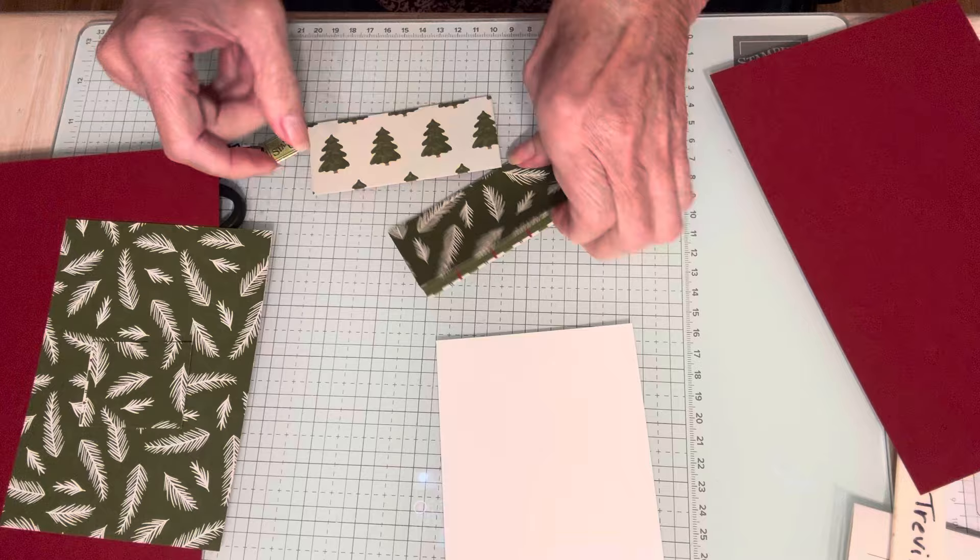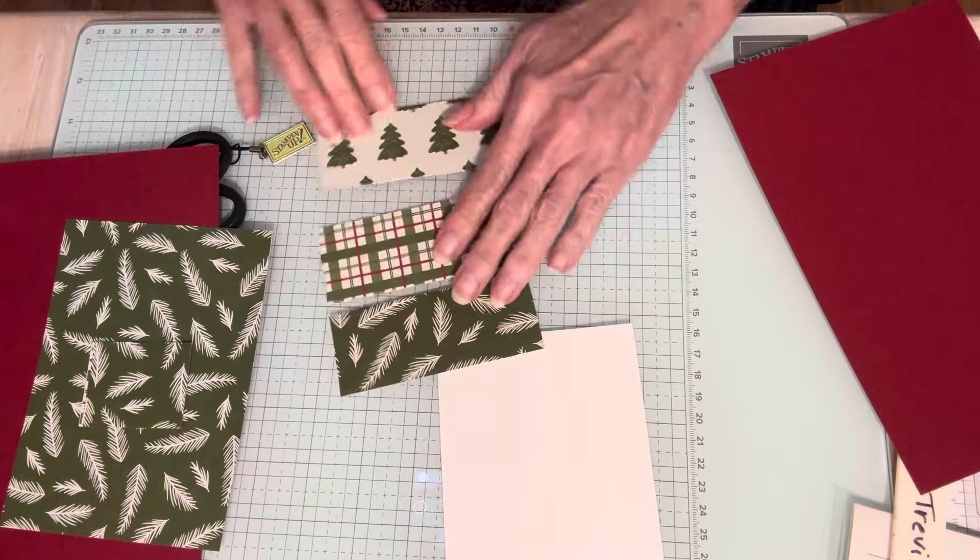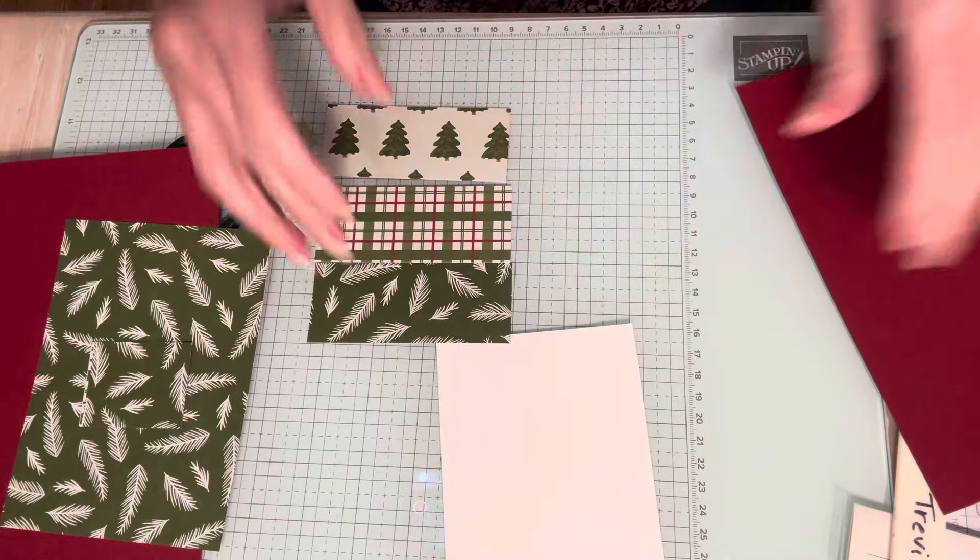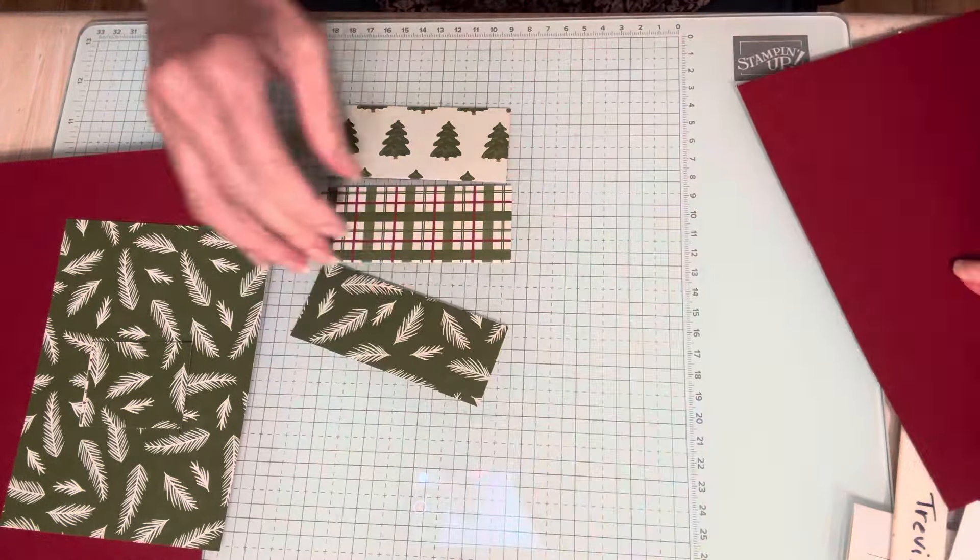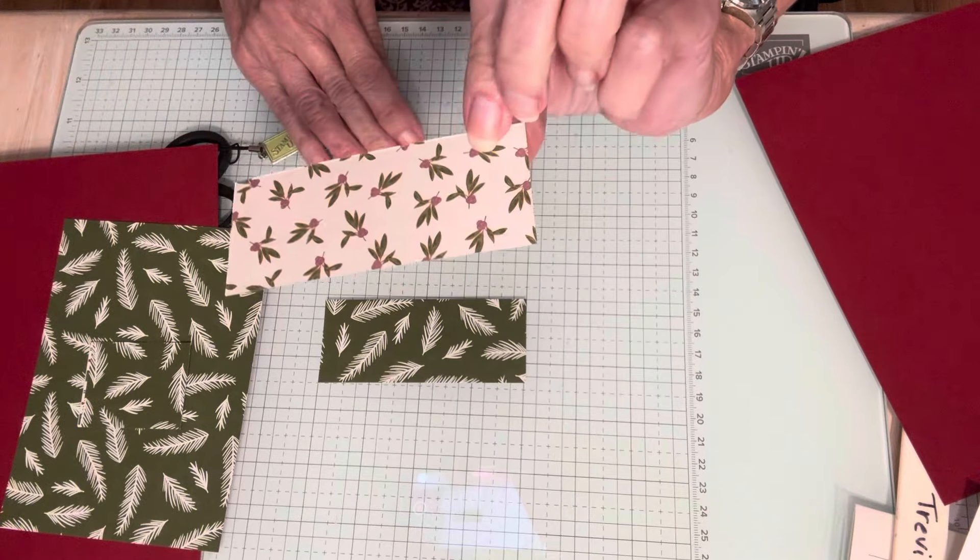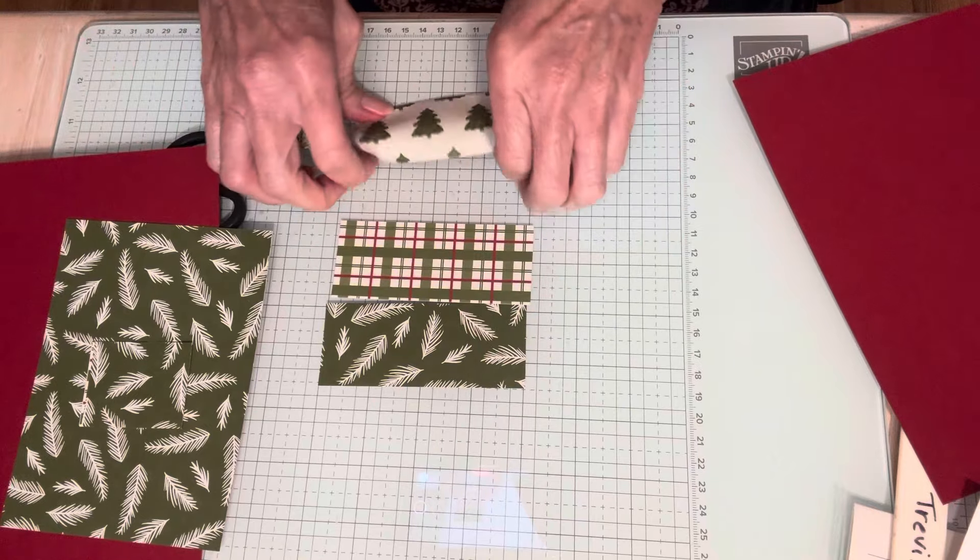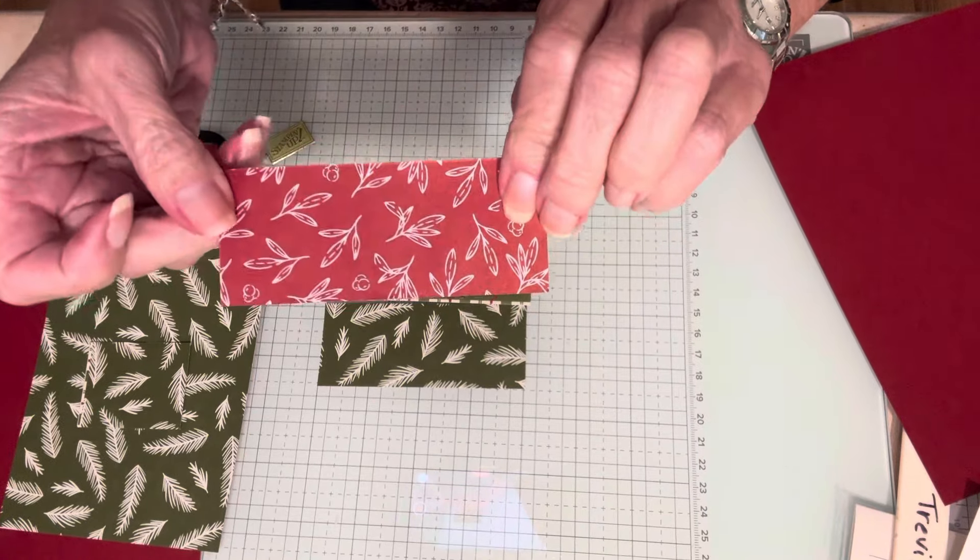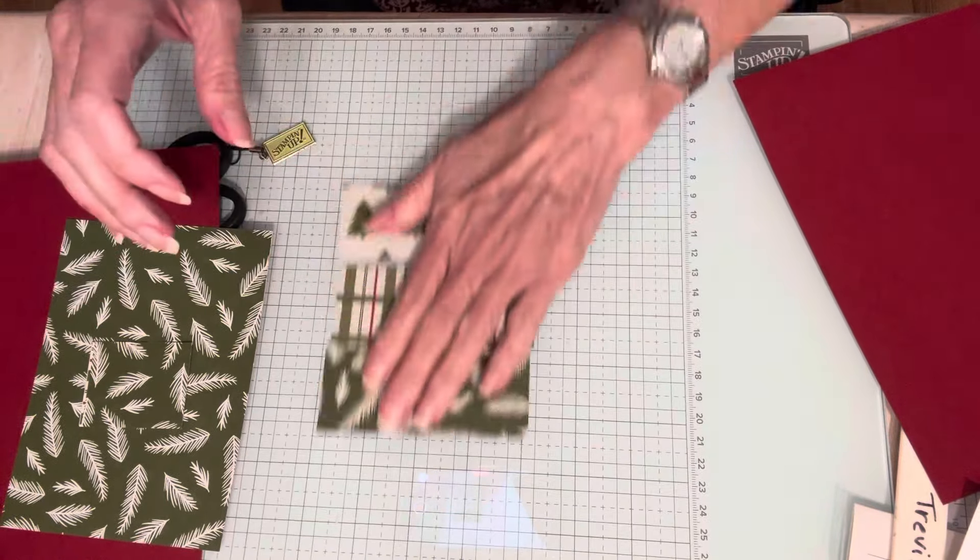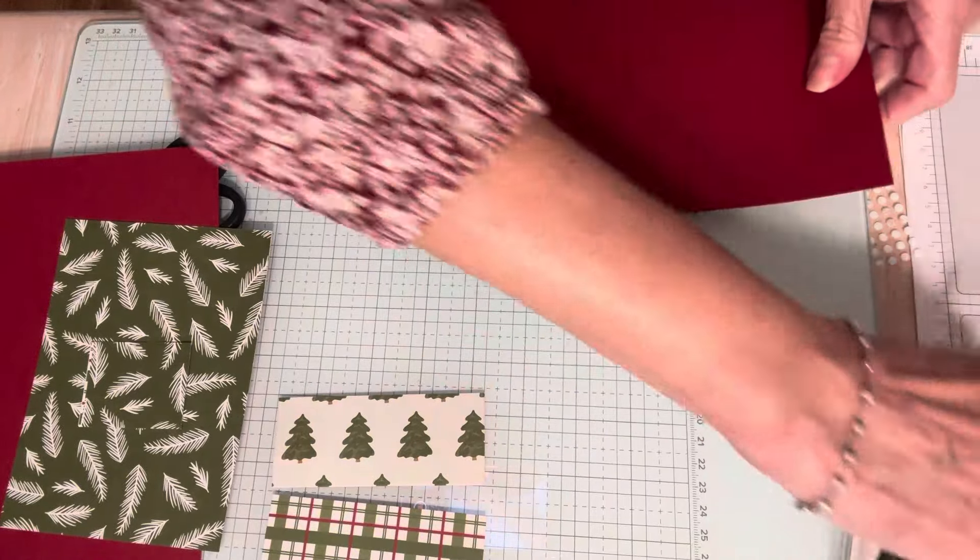So I have these three pieces and look how they coordinate. It's gorgeous. The other side is pretty too. I love the little peppermint sticks. This one is, I guess that's like berries and leaves. And this side is Cherry Cobbler leaves. So I'm going to go ahead and fold this in half.